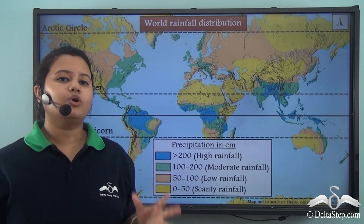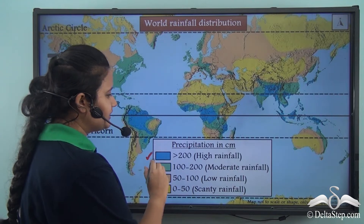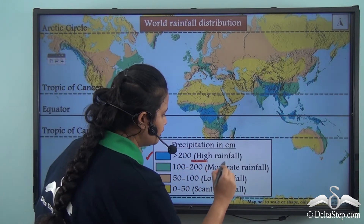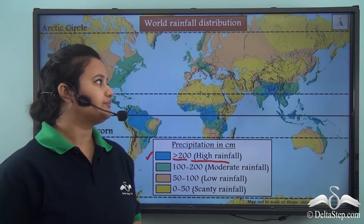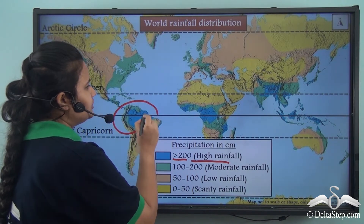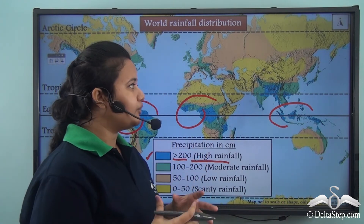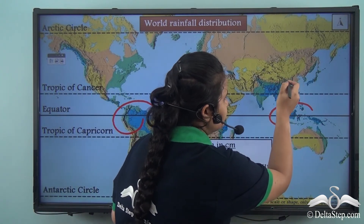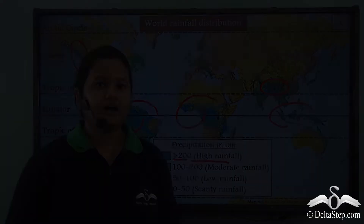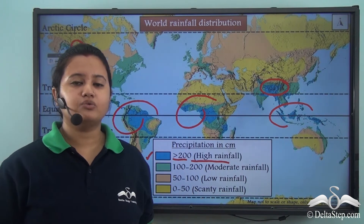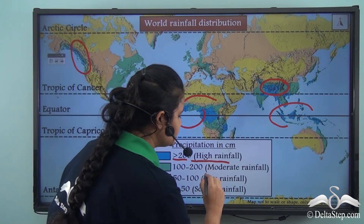This world map shows the worldwide distribution of rainfall. The regions marked in blue receive a high amount of rainfall — more than 200 cm of precipitation annually — and these are mostly equatorial regions. Also, regions in the lap of mountain ranges, such as the northeastern parts of India and the western side of North America, receive high amounts of precipitation.